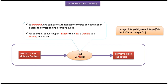In unboxing, Java compiler automatically converts object wrapper classes to corresponding primitive types. For example, Integer object will be converted to int, and Double object will be converted to double.